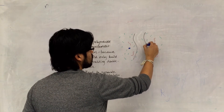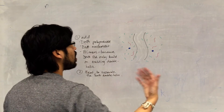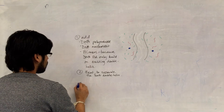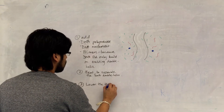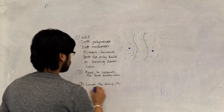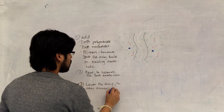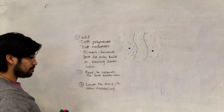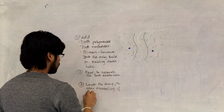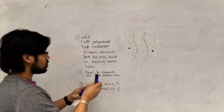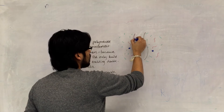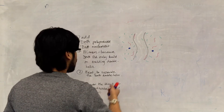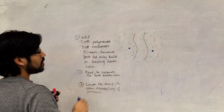Now what we do is we lower the temperature to allow the binding of the primers to sequences in the DNA. This step is called annealing. So we lower the temperature to allow annealing of the primers. Our primers will then find a complementary sequence and bind that way — they bind to the DNA.